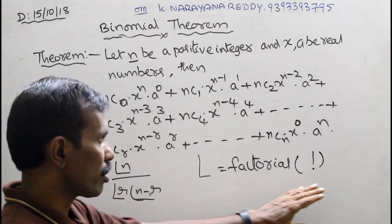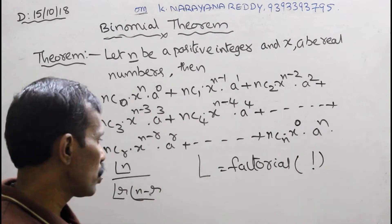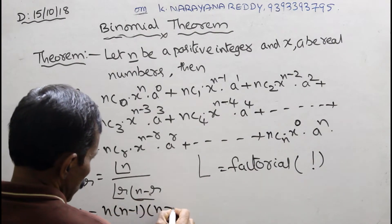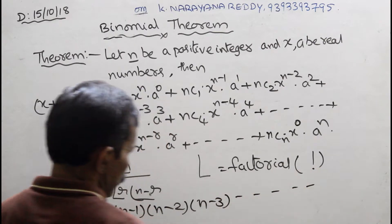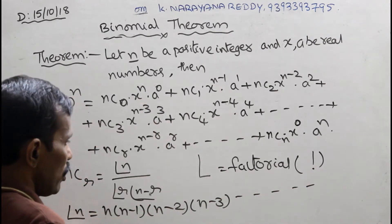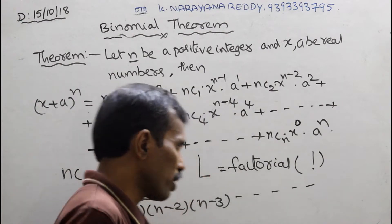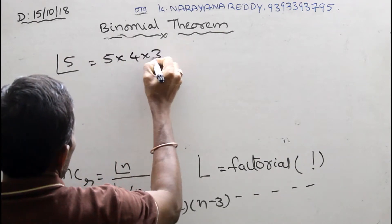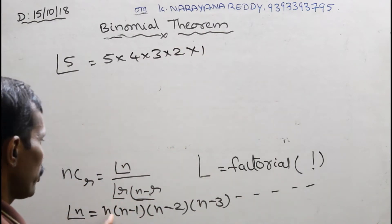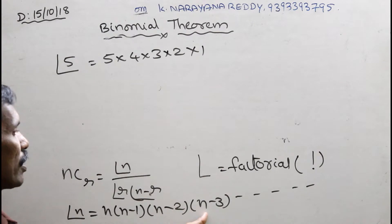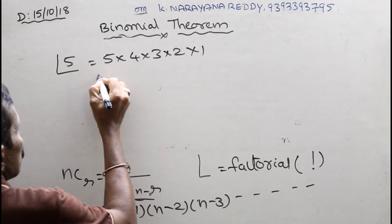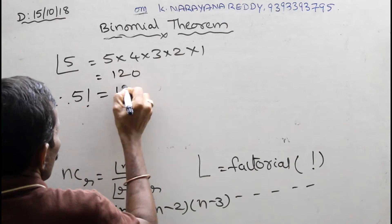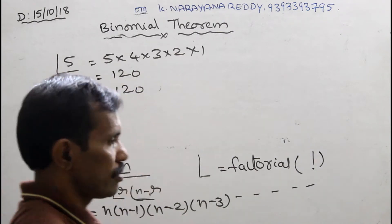Factorial n means n times n minus 1 times n minus 2 times n minus 3, and so on. For example, factorial 5 equals 5 times 4 times 3 times 2 times 1, which equals 120. Therefore factorial 5 equals 120.